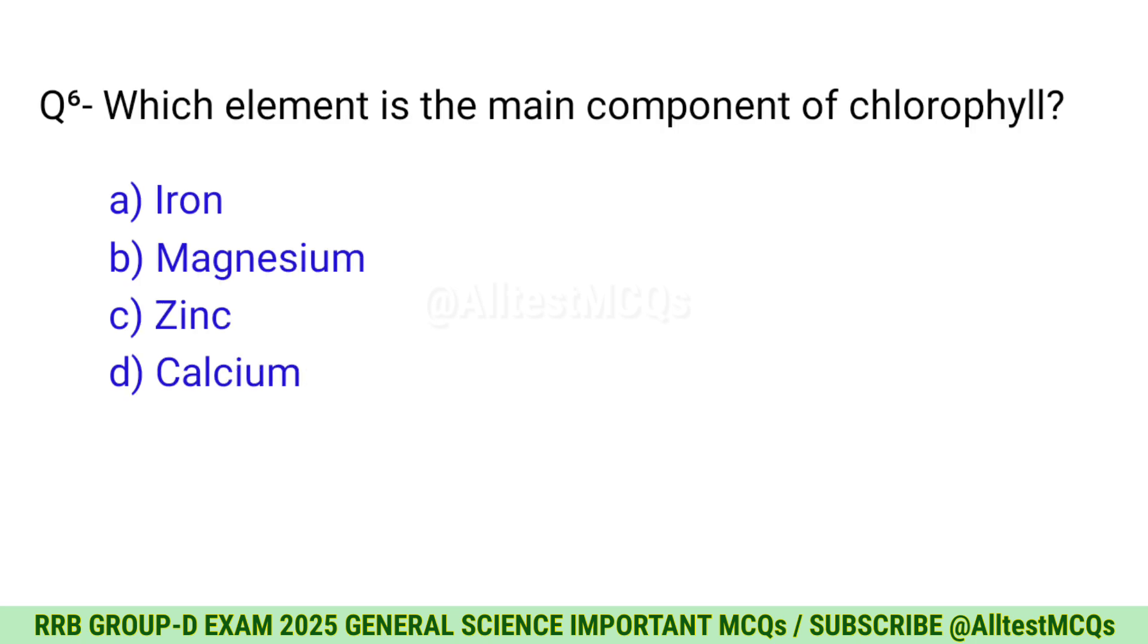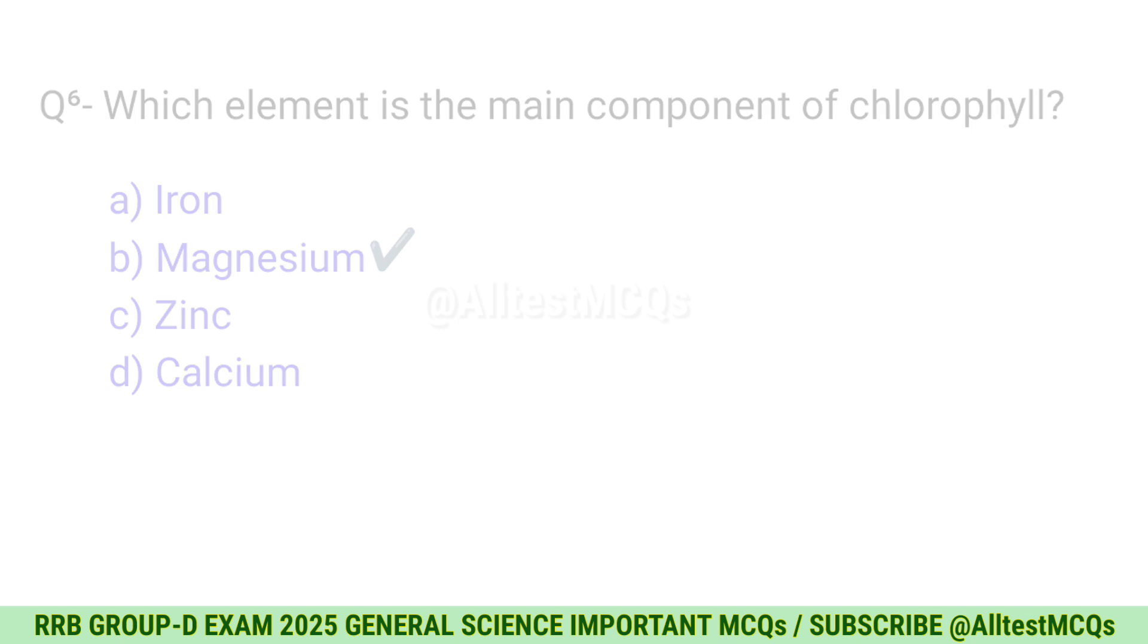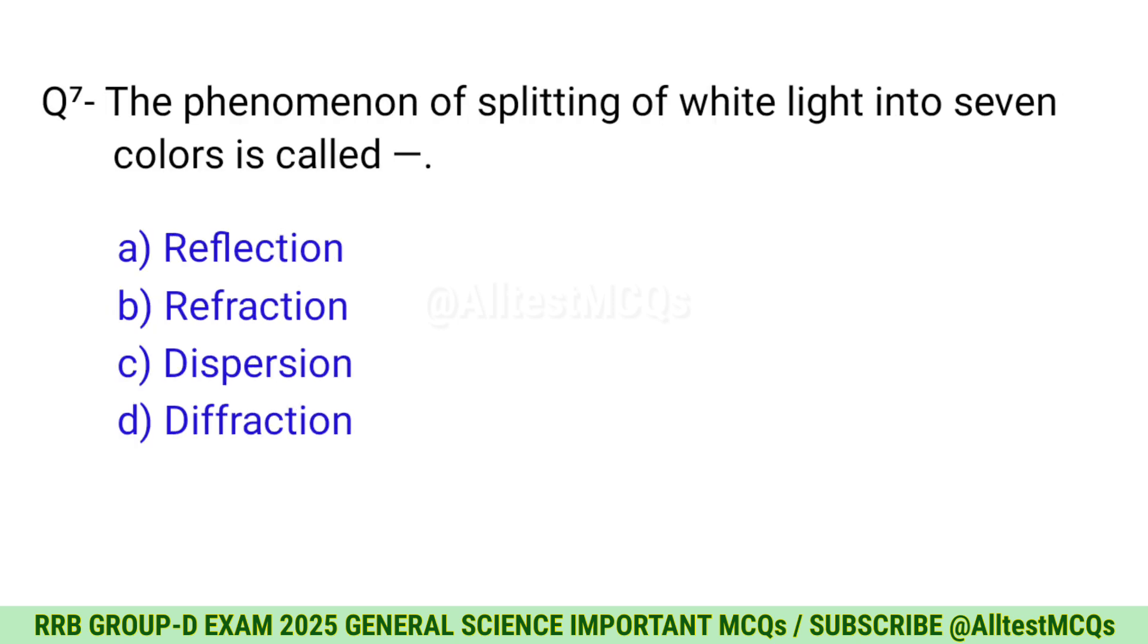Question 6: Which element is the main component of chlorophyll? Correct option is B, Magnesium. Question 7: The phenomena of splitting a white light into seven colors is called? C, Dispersion.